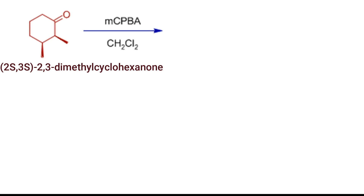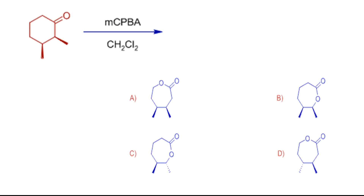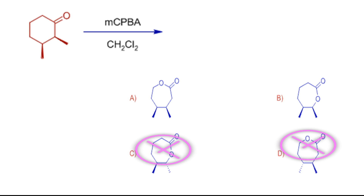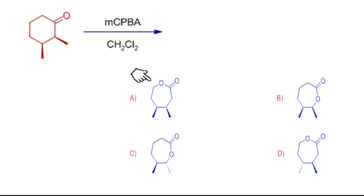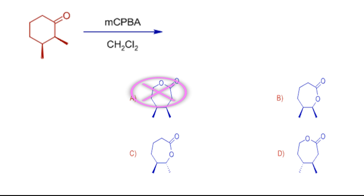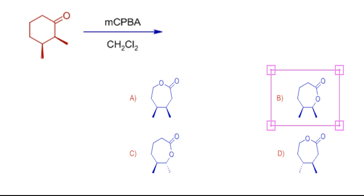Let us predict the major product when (2S,3S)-2,3-dimethylcyclohexanone is treated with MCPBA. Four options are given. The first thing to notice is the stereochemistry of the reactant, which should be retained in Baeyer-Villiger oxidation. Thus options C and D are nullified because stereochemistry is not retained. Options A and B show retention of configuration. Option A shows migration of methylene in preference to more substituted carbon, so it is also cancelled. Option B correctly shows migration of the more substituted carbon with retention of stereochemistry in the migrating group. Thus option B is the correct choice.